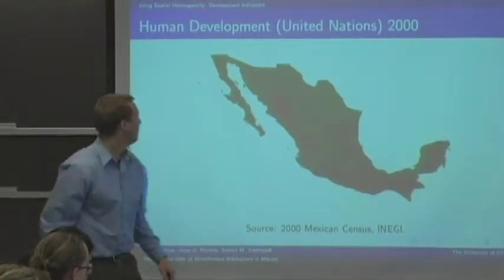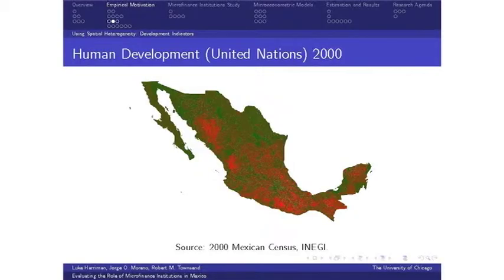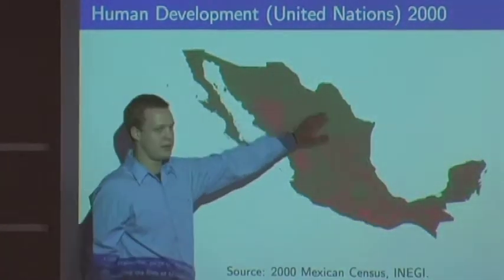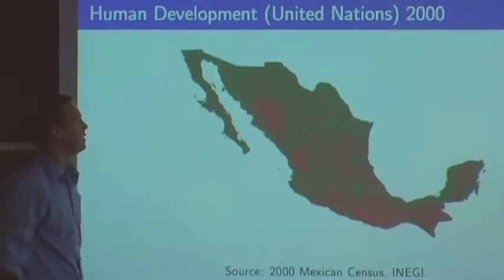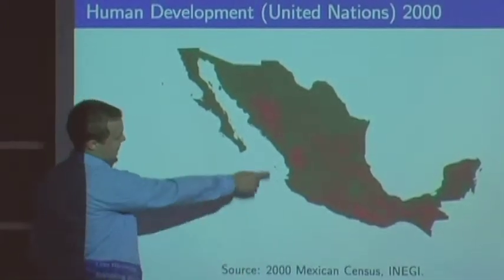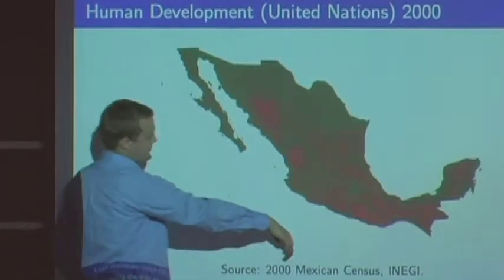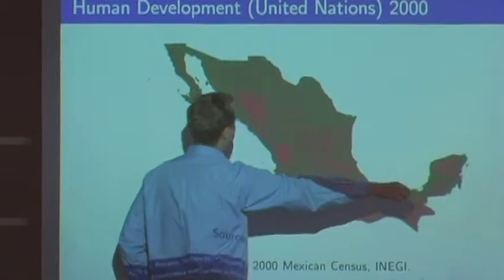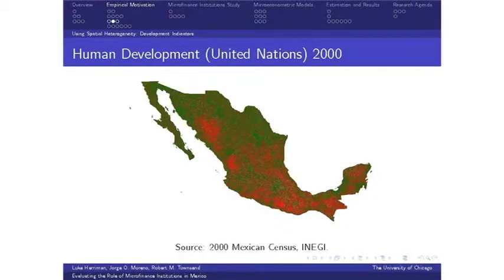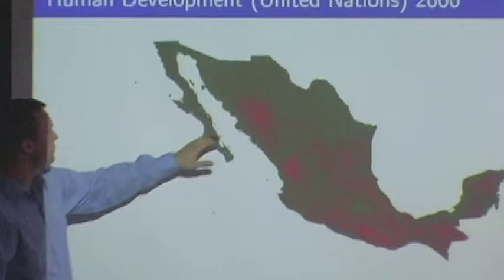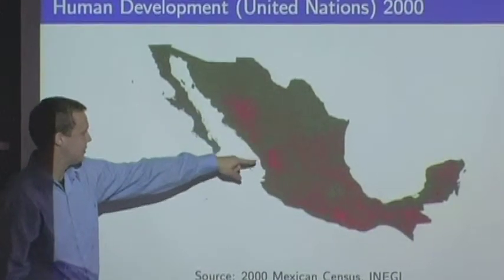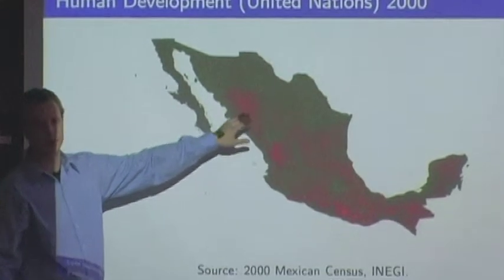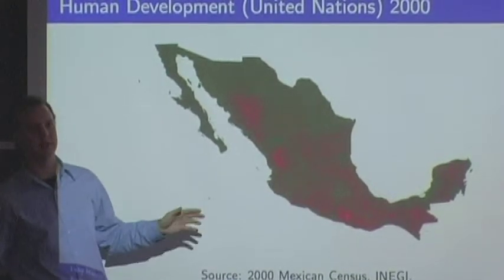Moving to a different measure — the Human Development Index by the United Nations. Along the U.S. border there are relatively high levels of human development, which takes into account GDP, life expectancy, and education. You also see generally higher levels along the coast and in major cities like Mexico City and Cancun. This contrasts with areas that are more predominantly poor and rural, usually found in mountainous areas — the Sierra Madre Occidental on the western coast, the Sierra Madre Oriental, and the Sierra Madre del Sur — which have much higher levels of poverty and are more rural, with less access to services.